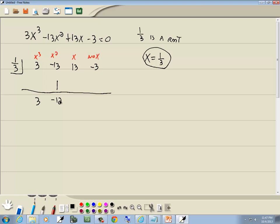Then multiply. Multiply by the number in the box by the number you just put down there. 1/3 times negative 12 gives you negative 4. Add. 13 minus 4 gives us 9. Multiply. Always multiply by the number in the box by the number you put down there. 1/3 times 9 is 3. And add. Negative 3 plus 3 gives us 0.